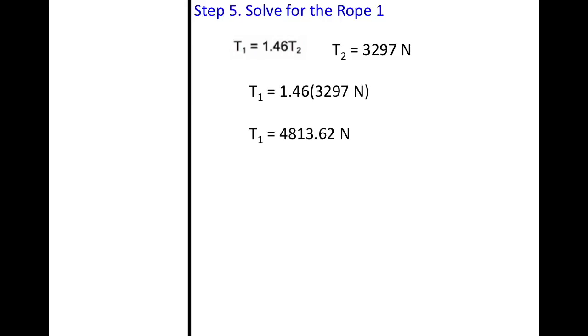And that is your answer. So now you know that your tension in your rope is 3,297 for your second rope and your other tension in your first rope is 4,813.